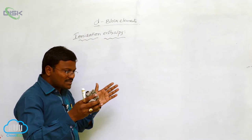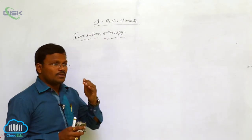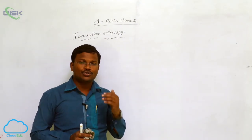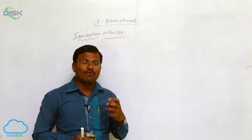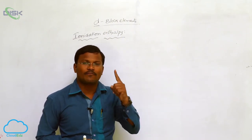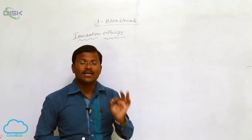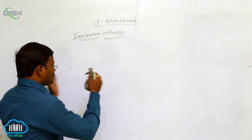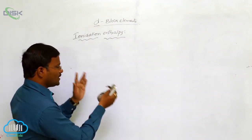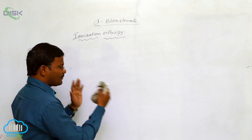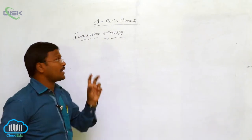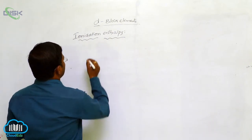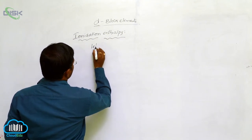When atomic size decreases, the amount of energy required to eliminate electrons from the valency orbit increases. Therefore, from scandium to zinc, or left to right across D-block elements, ionization enthalpy increases. This is why ionization enthalpy increases from left to right.